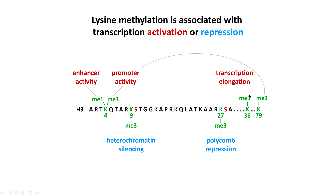Lysine 36 trimethylation is associated with transcription elongation — you'll see it at gene bodies and 3' UTRs of genes undergoing transcription, but not at promoters. Alternatively, trimethylation of either lysine 9 or lysine 27 on histone H3 are associated with gene silencing: lysine 9 trimethylation is associated with heterochromatin formation, and lysine 27 trimethylation is associated with polycomb repression. So histone methylation specifies many specific events during transcription, not simply active or repressive.